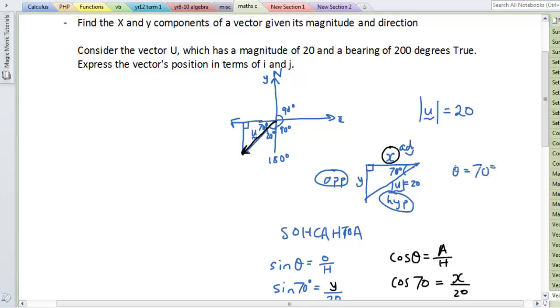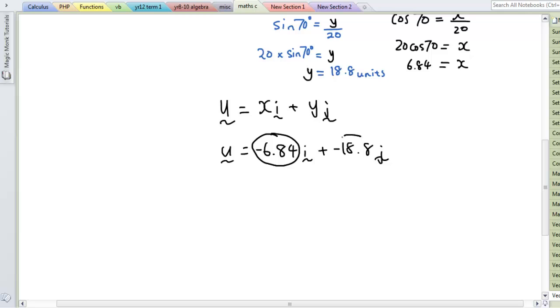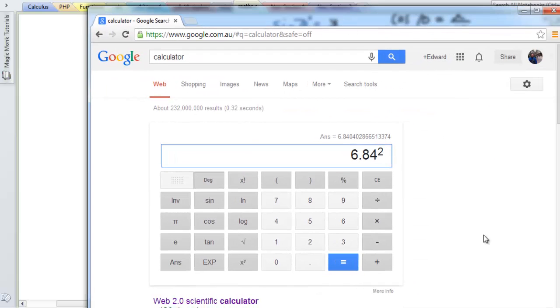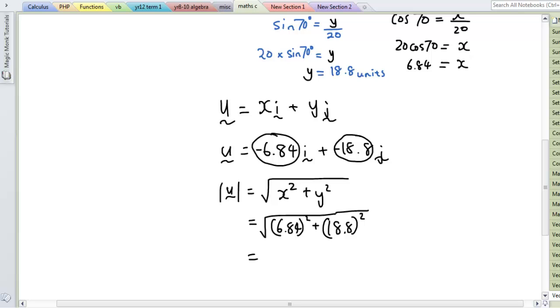Now if you want to check whether you have done this right, you can always put these numbers into your magnitude formula again. So the magnitude is equal to square root of x squared plus y squared. So that's 6.84 squared plus 18.8 squared. You can put the negative sign in there if you want. It'll just give you the same thing. So let's put that in our calculator. 6.84 squared plus 18.8 squared, and if we square root that, it's about 20. So it's about 20, which is correct.